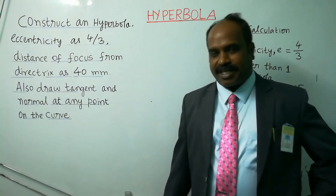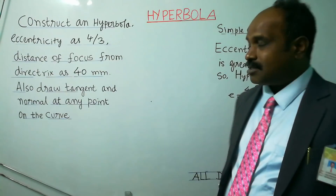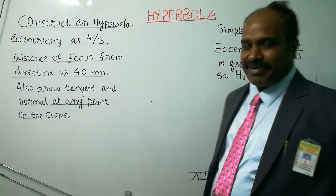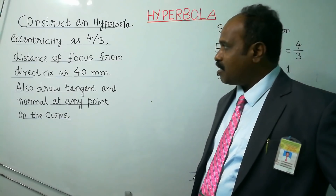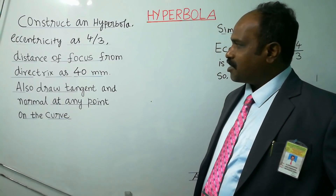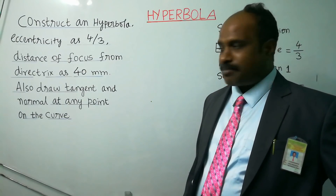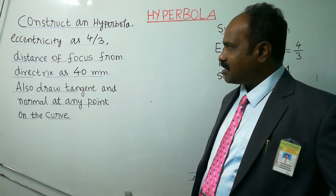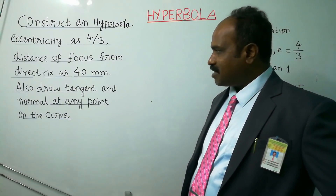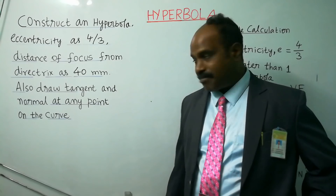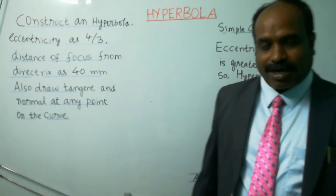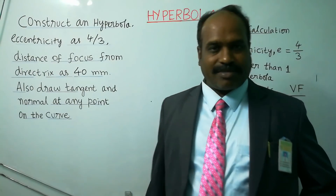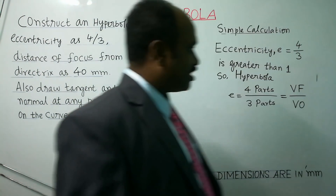The topic is construction of a hyperbola. The question may be given like this: construct or draw a hyperbola where eccentricity is 4 by 3, the distance of focus from the directrix is 40 mm. Also draw tangent and normal at any point on the curve.